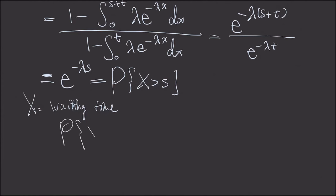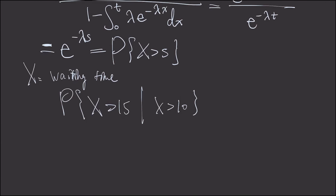And this means the conditional probability of x is greater than 10, that x is greater than 15. If we try to interpret this, this means x is greater than 10, it means we have already have waited for 10 minutes or longer.